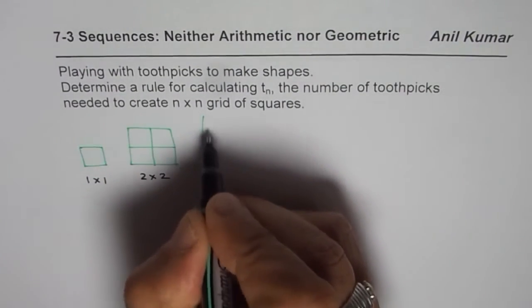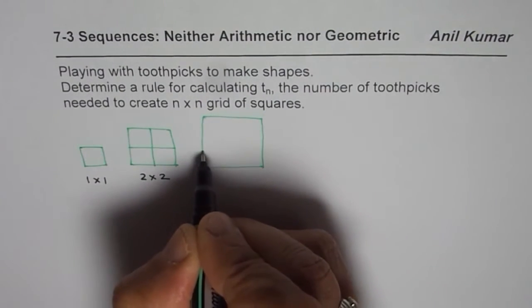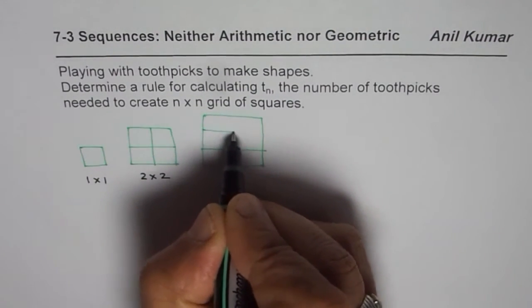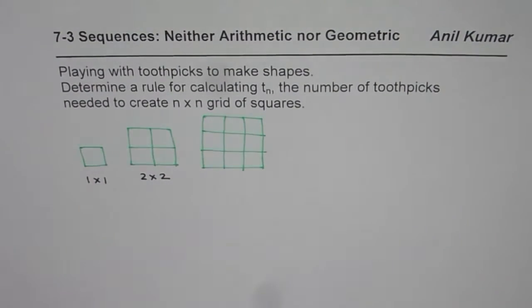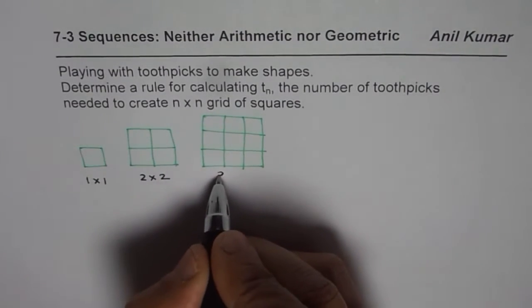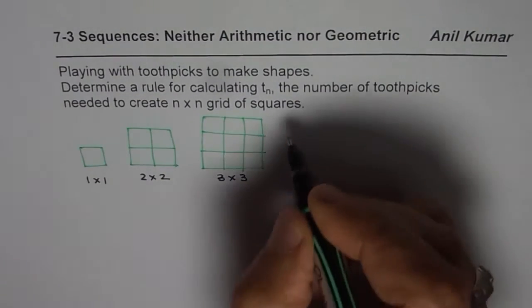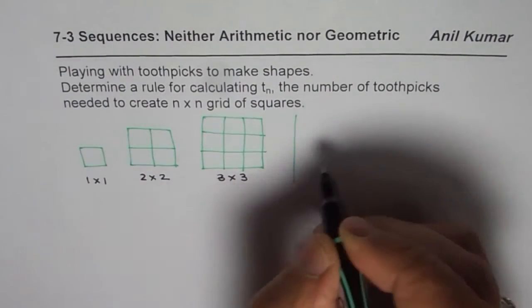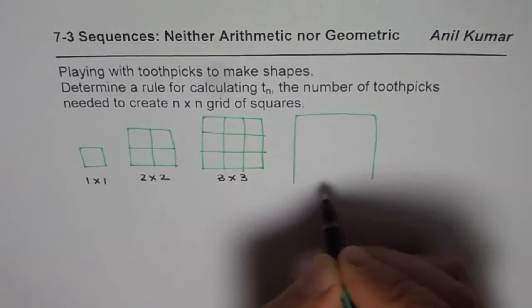Let me make one three by three grid now. Three by three will give me nine squares. And similarly we can make one four by four.